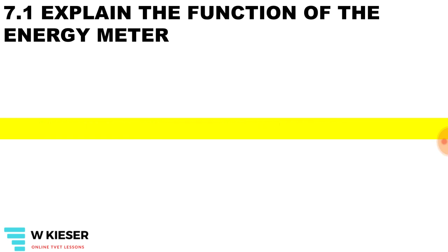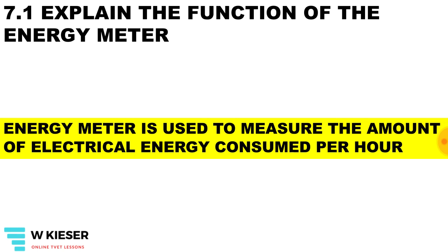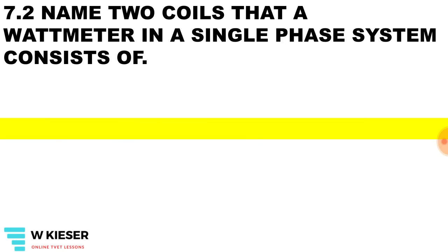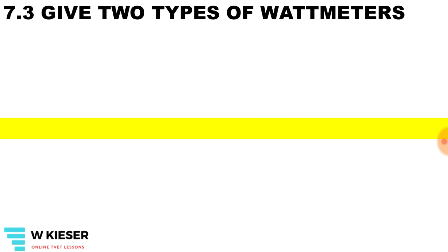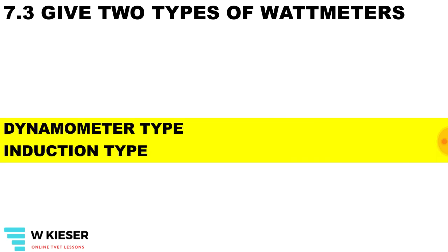Explain the function of an energy meter. The energy meter is used to measure the amount of energy consumed per hour. The two coils that a wattmeter uses in a single-phase system consist of the current coil and the voltage coil. Give two types of wattmeters: the dynamometer type and the induction type.